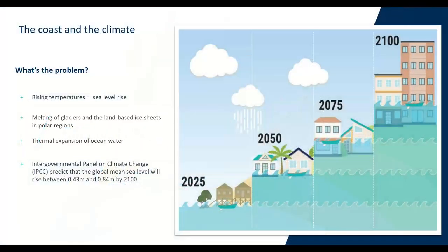In terms of climate change, there's been a lot in the news recently. The IPCC report hasn't been great news. Rising global temperatures are leading to global sea level rises by causing the melting of glaciers and land-based ice sheets in polar regions, as well as thermal expansion of ocean water. Since the early 1990s, global sea levels have been monitored by satellites, which show it's currently rising at an average of 3.3 millimeters per year.